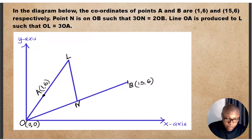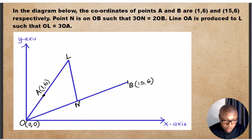Hello and welcome. Let's solve this question on vectors. In the diagram below, the coordinates of point A and B are (1, 6) and (15, 6) respectively.